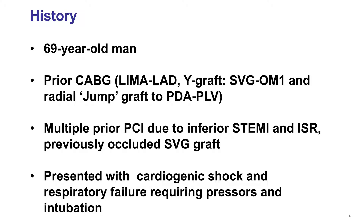The patient was a 69-year-old man with previous coronary bypass. He had a LIMA-to-LAD and a Y-graft: a vein graft to OM with a radial jump graft to the PDA and the posterior lateral vessel. He had multiple previous PCIs, a non-occluded saphenous vein graft, and he presented with cardiogenic shock.